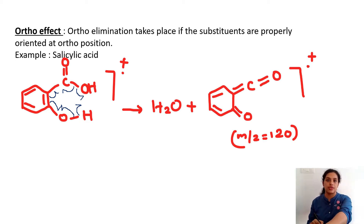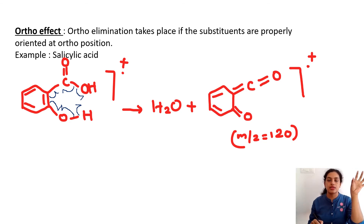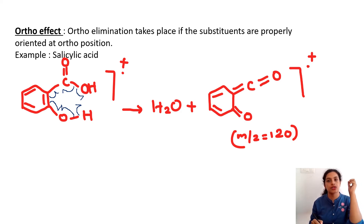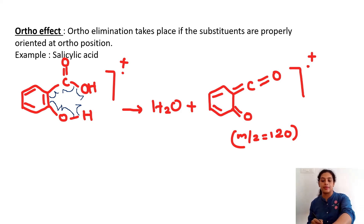When the water molecule is expelled, the remaining species has a new bond formed between the ring and oxygen, and another new bond between the ring and the carbonyl carbon. The peak is obtained at m/z = 120. This is the ortho effect, where properly oriented groups at ortho positions cause elimination of small molecules like water.